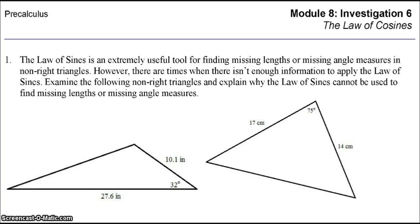Module 8, Investigation 6, The Law of Cosines. The Law of Sines is an extremely useful tool for finding missing lengths or missing angle measures in non-right triangles. However, there are times when there isn't enough information to apply the Law of Sines. Examine the following non-right triangles to explain why the Law of Sines cannot be used to find missing lengths or missing angles.